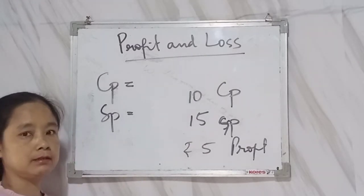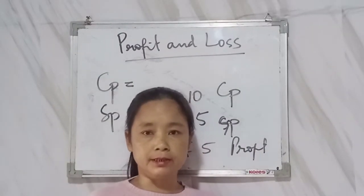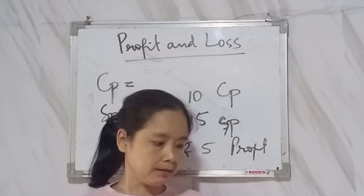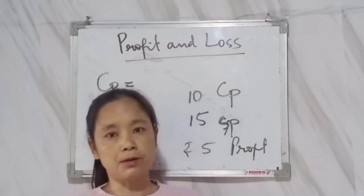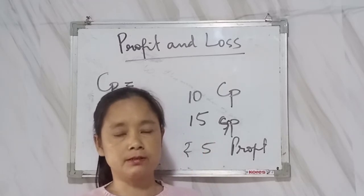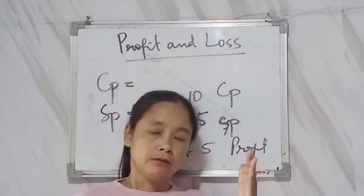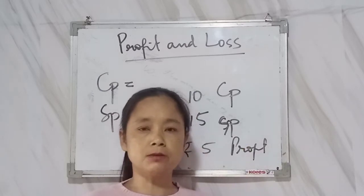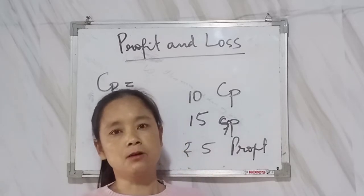Today I'm going to give you an assignment on word problems. The first thing when you are solving a word problem is that you have to read the question carefully and understand it first. After that you will know from the question which one is the cost price, which one is the selling price, what is the profit percent, and what is the loss percent — then you will be able to find what the question asks you to find.